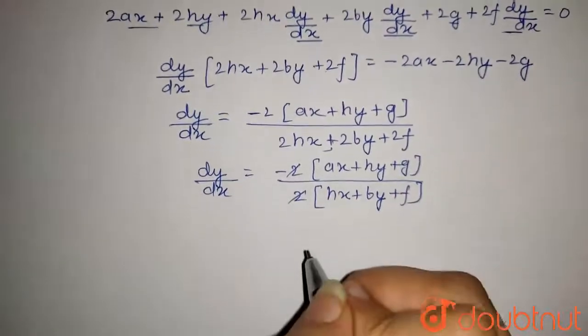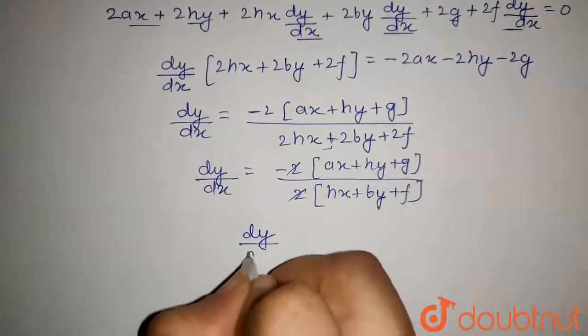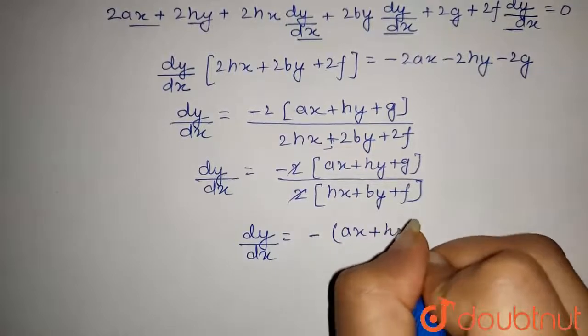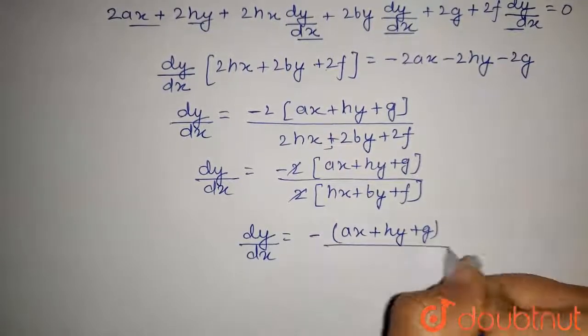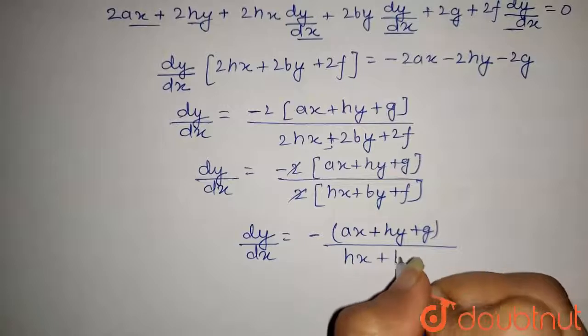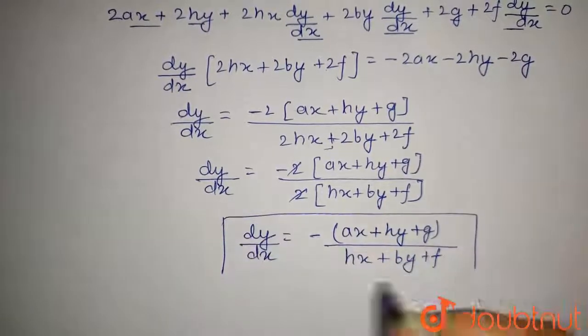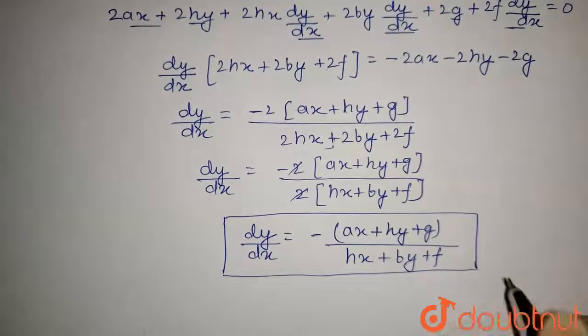Now this 2 and 2 will get cancelled so we get dy by dx as minus of ax plus hy plus g upon hx plus by plus f. So this is the answer of this question.